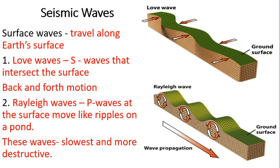The next wave type is surface waves, which travel along the Earth's surface. The first is the Love wave, which travels in a snake-like pattern on the surface of the Earth, moving forward and backward in direction. The second category is Rayleigh waves, which travel on the surface and cause a rippling motion like on a pond — continuous circular or rippling effects on the ground. These surface waves are the slowest but highly destructive in nature.